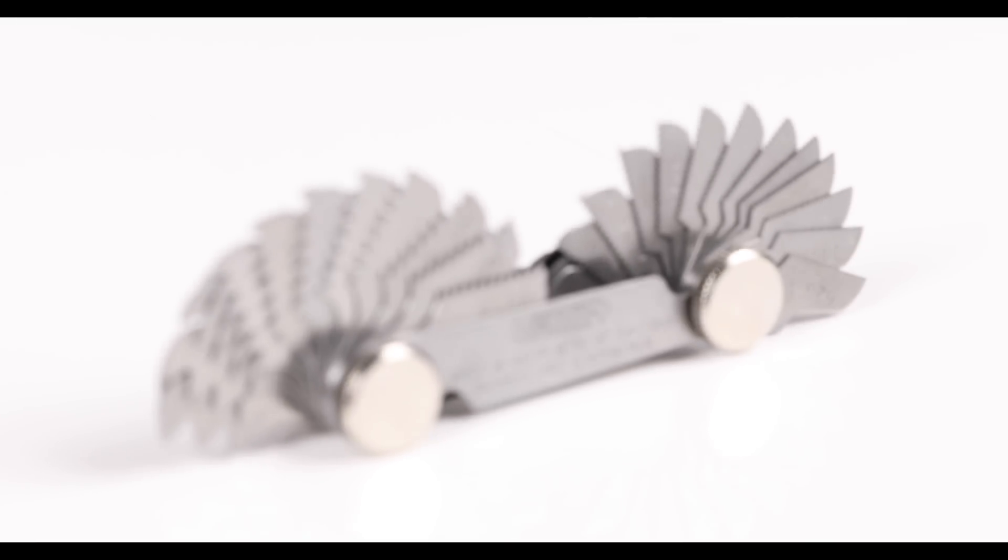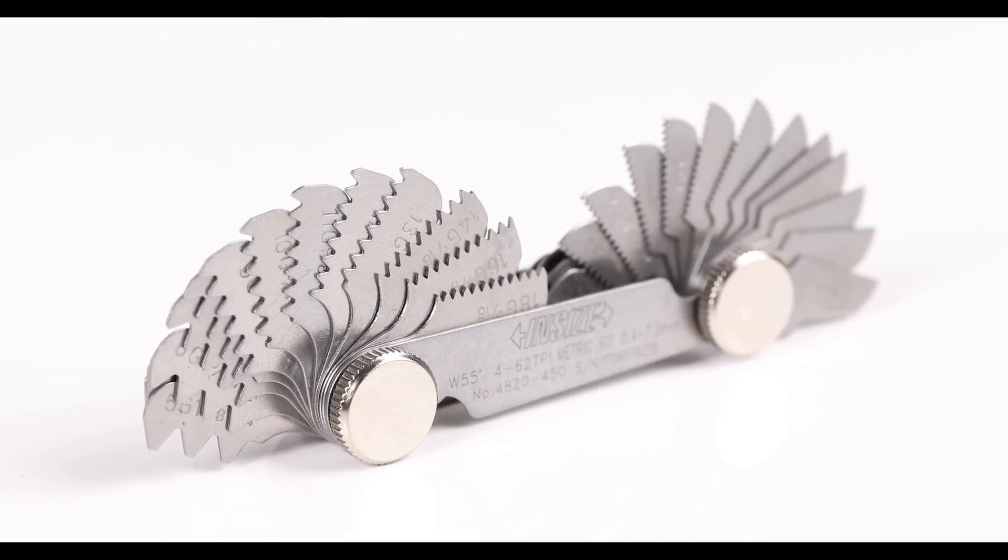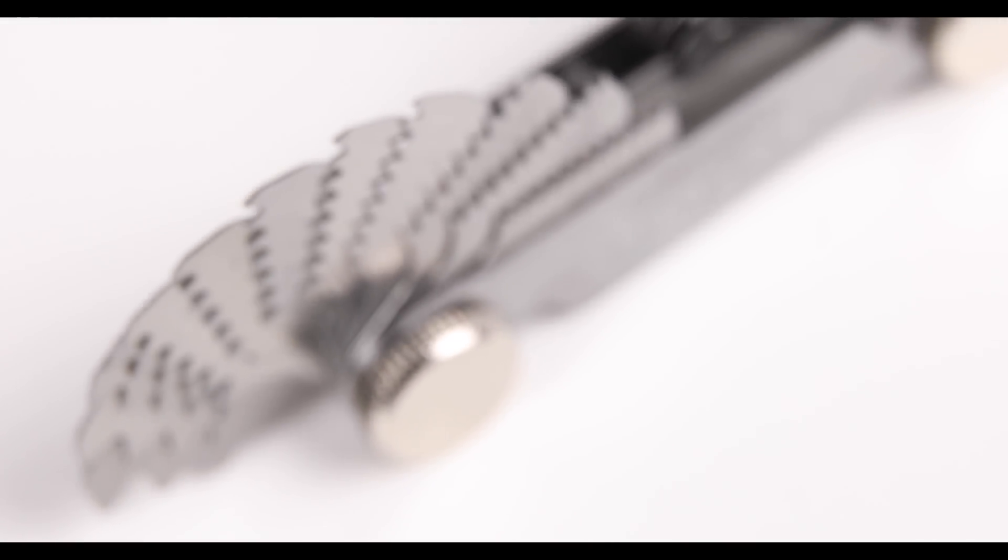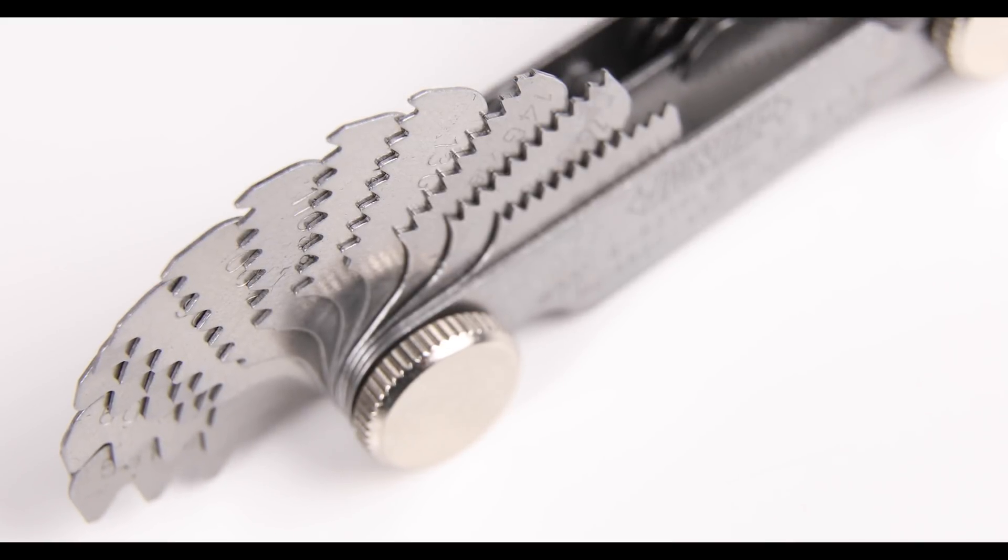One of the biggest advantages of using a leaf thread gauge to check screw thread pitch is that it's a single tool, making it a cost-efficient solution capable of measuring a large range of screw thread pitches. They are designed to help identify unknown thread sizes when there could be a number of possibilities.